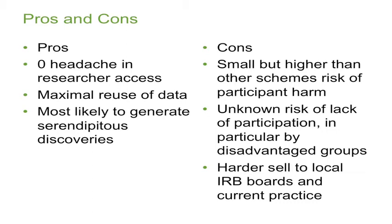The cons are that there's a small but higher risk of participant harm. The authors — Laura and others — pointed out there's an unknown risk of what happens for participation: would an open access proposal change the participation rate, particularly by disadvantaged groups? It's probably a harder sell to local IRB boards and would be the biggest change from current practice. The system would find it the most challenging to get its head around.